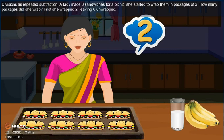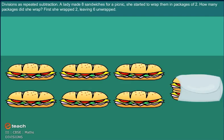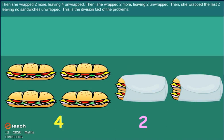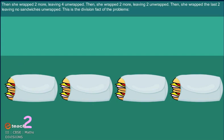First, she wrapped 2, leaving 6 not wrapped. Then she wrapped 2 more, leaving 4 not wrapped. Then she wrapped 2 more, leaving 2 not wrapped. Then she wrapped the last 2, leaving no sandwiches unwrapped.